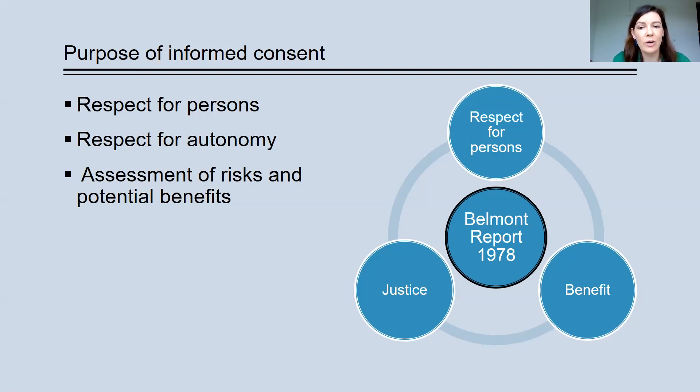To take one example, we can look at the Belmont Report, produced in 1978. And this is in the United States. And they define the three key ethical principles of research as respect for persons, justice and beneficence, which means that research should generate benefits, social benefits for the community. So informed consent relates to this first principle, respect for persons.